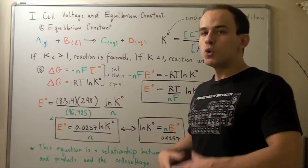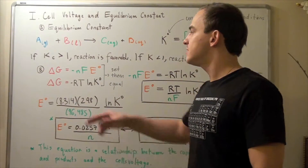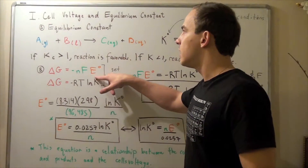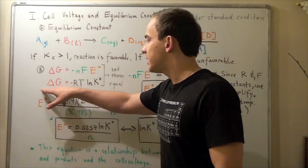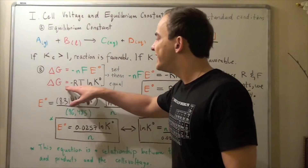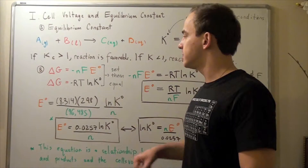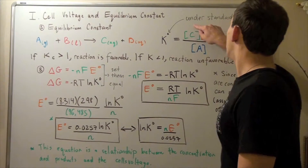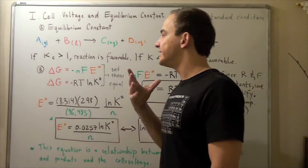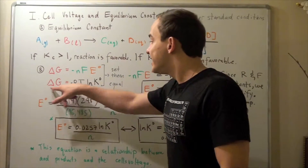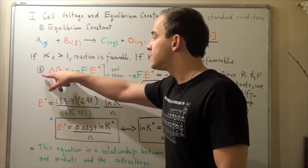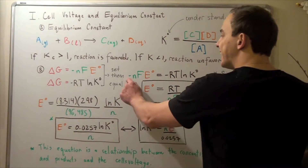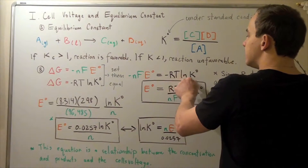The change in Gibbs free energy is equal to negative N — the number of moles of electrons — times Faraday's constant, times the cell voltage: ΔG = -nFE. From before, we also know that ΔG = -RT ln K, where R is the gas constant and T is temperature in Kelvin, and K is the equilibrium constant. We can set these two expressions equal to each other since they both equal the change in Gibbs free energy. So: -nFE = -RT ln K.